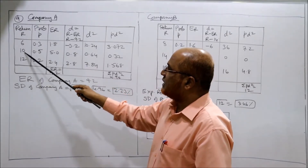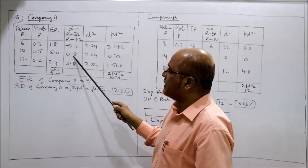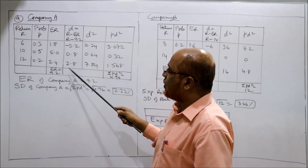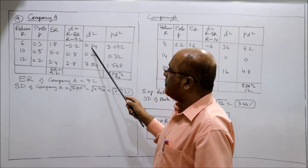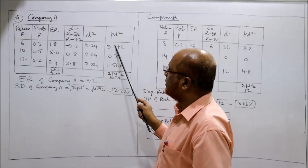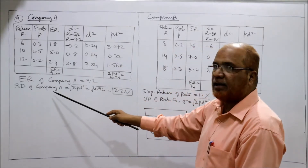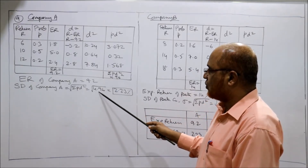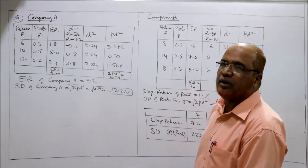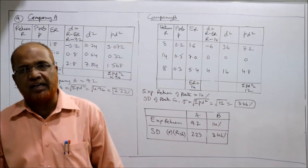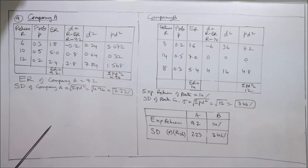Now compute the deviations: R minus expected return (9.2). So: 6 minus 9.2 = minus 3.2; 10 minus 9.2 = 0.8; 12 minus 9.2 = 2.8. Square these deviations, then multiply D² by probability P to get PD². The standard deviation of Company A is the square root of the summation of PD², which equals the square root of 4.96, giving 2.23. Company A: expected return 9.2%, standard deviation 2.23.